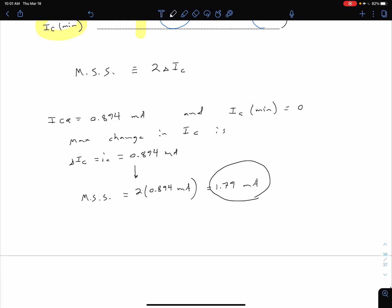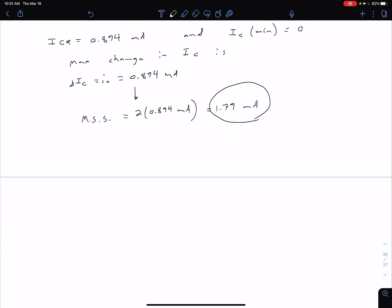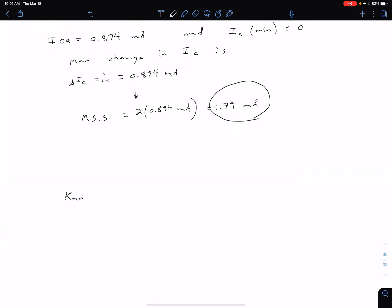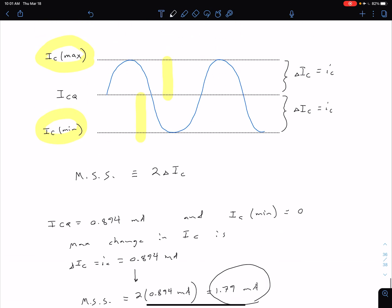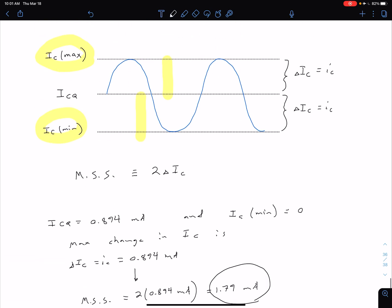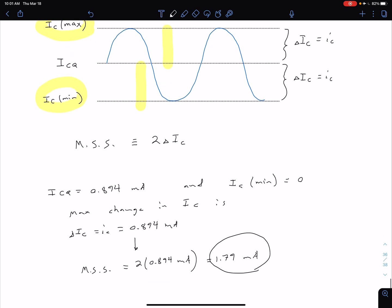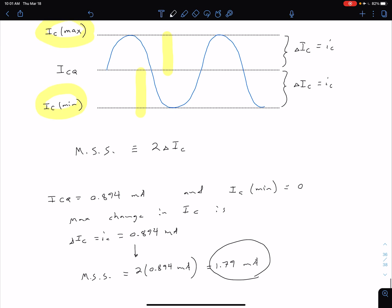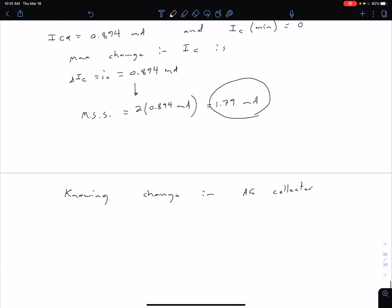The benefit of that is then knowing the change in our AC collector current. Because remember, if we're talking about deviations from ICQ, at the moment we're neglecting any changes from beta variations or things like that, temperature changes. We're saying this is purely due to some input signal, some sinusoidal input that's superimposed on top of that DC signal.